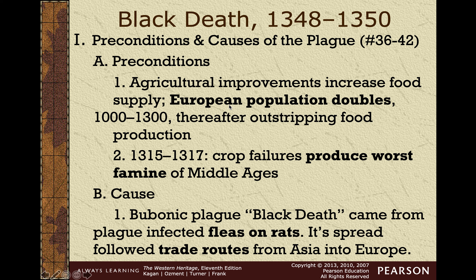We're going to see the Black Death enter Europe through trading routes. It originated in Asia, came to Europe via trade routes and the Mediterranean. The bubonic plague came on the fleas that were on rats — rats would stow away and get into ships moving across the world, bringing the fleas and the bubonic plague with them. That is going to have tremendous effects on Europe.